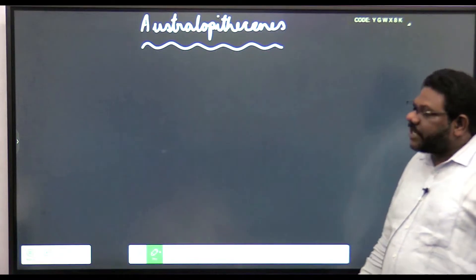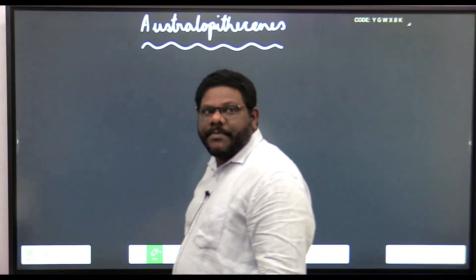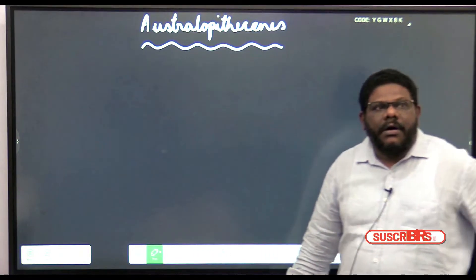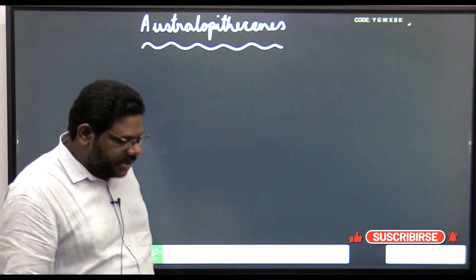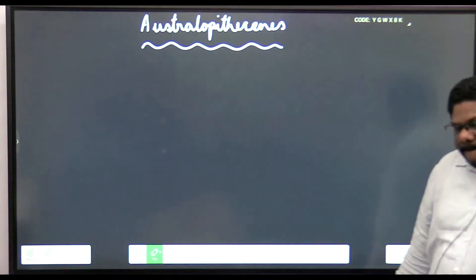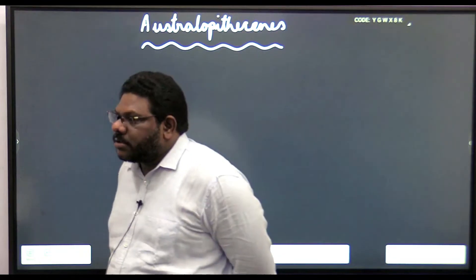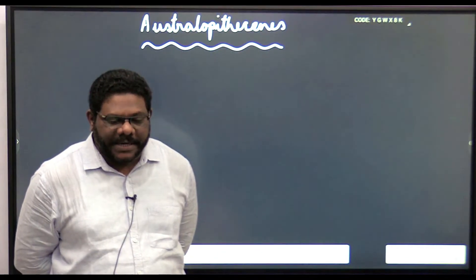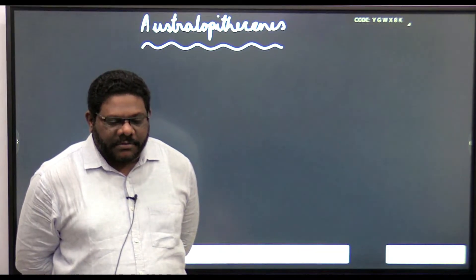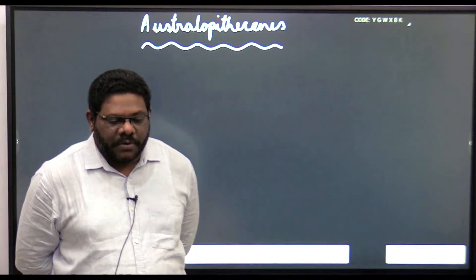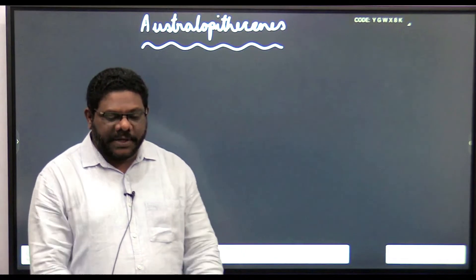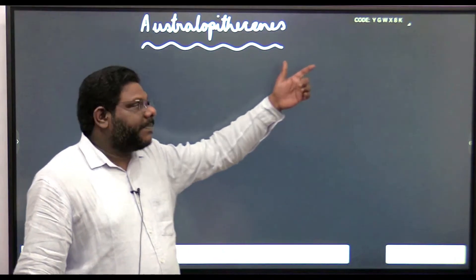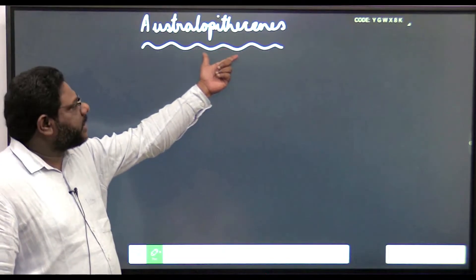Australopithecus is a collective name given to all the members of the genus Australopithecus. Australopithecines are the forerunners or predecessors of the genus Homo. Before Homo came into existence, it was Australopithecus. Genus Homo has species like habilis, erectus, neanderthal, sapiens, etc. These are the forerunners of genus Homo.